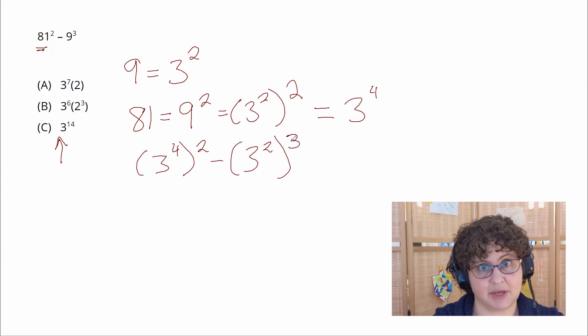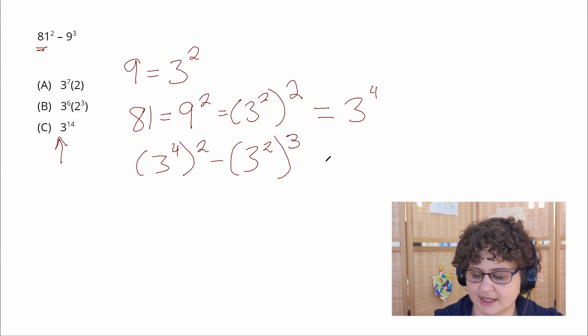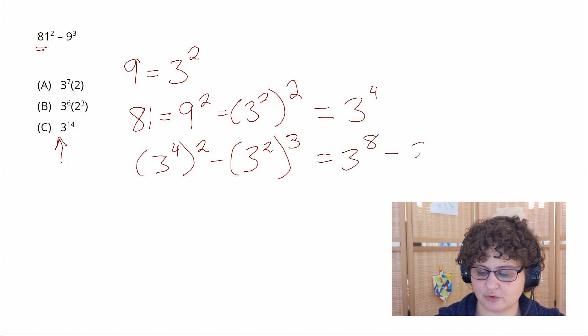That's what the problem is asking me. We can simplify this further by raising one exponent to another. So 3 to the fourth squared is 3 to the eighth minus 3 squared cubed 3 to the sixth.